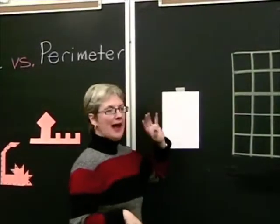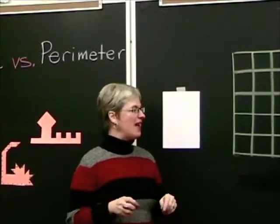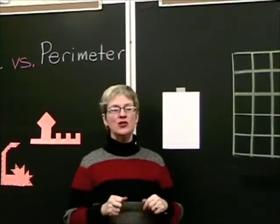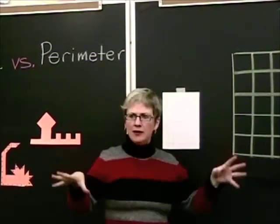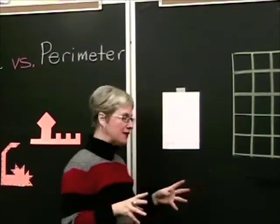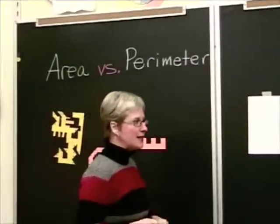Now what we're going to do is create a figure that has exactly 24 square units as its area, but I want all of the figures to be wildly different like mine over here. No two should be exactly alike.